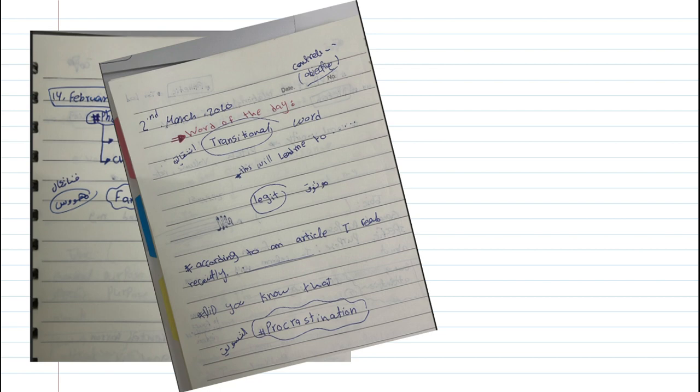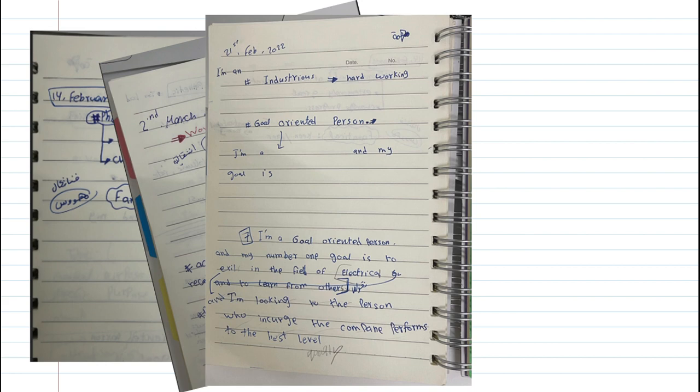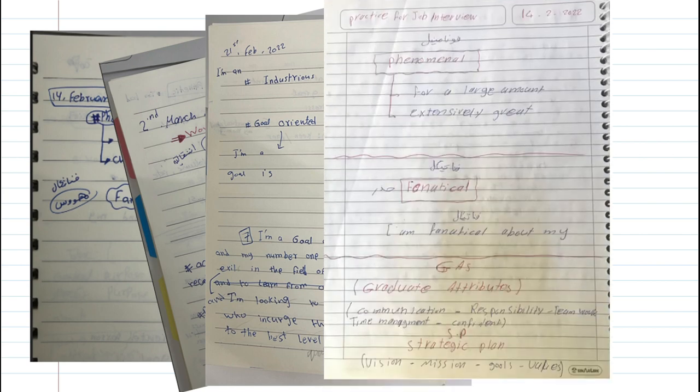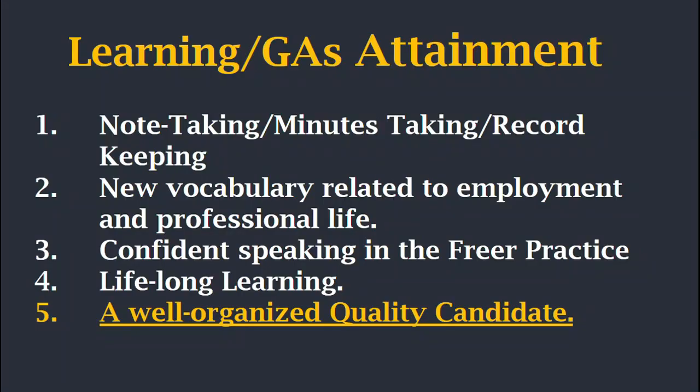More sample vocabulary from student notebooks: legit, transitional, procrastination — dated 21st February — industrious, goal-oriented. Sample answers they worked on are also there. Another student has written graduate attributes, strategic plan, reliable, trustworthy. I also told them to watch TED Talks.